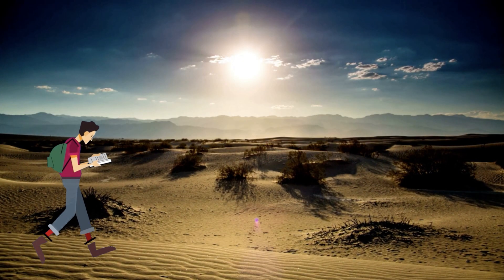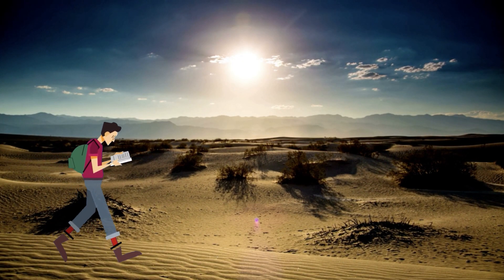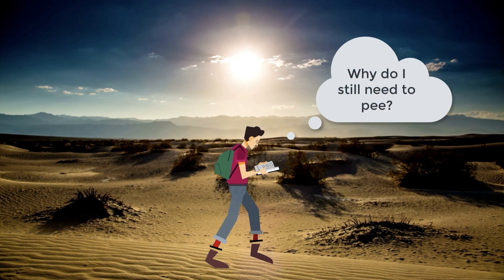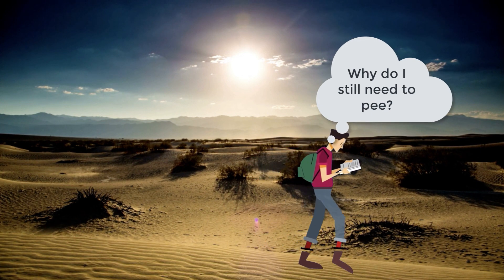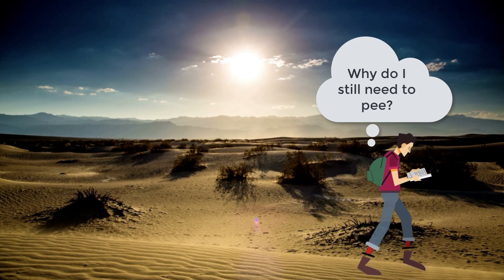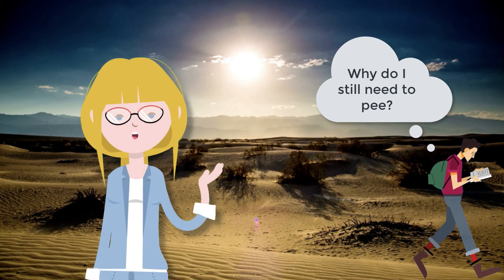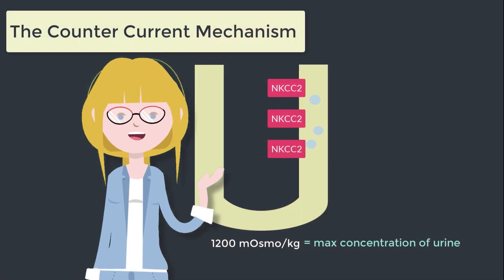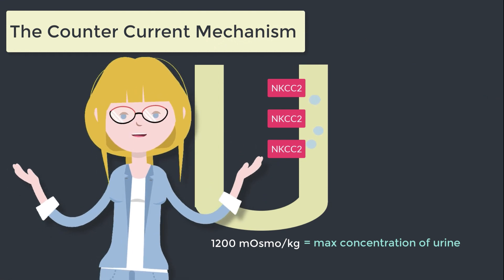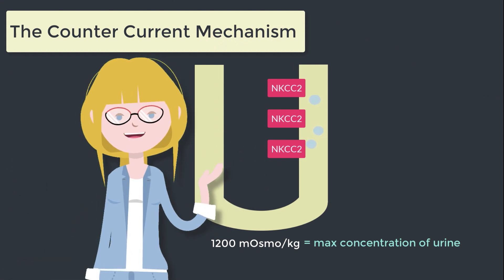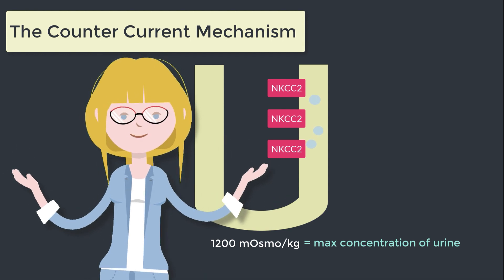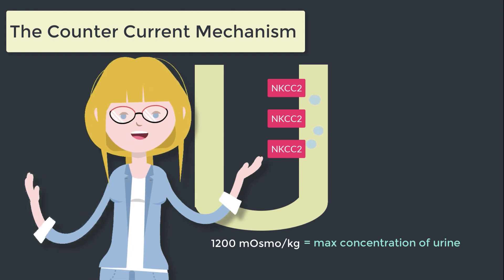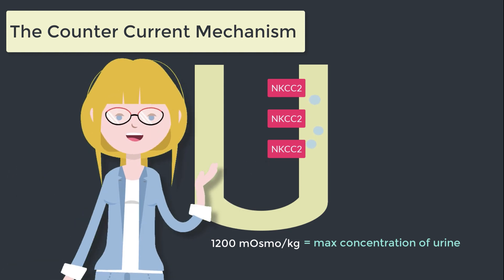Even if you are dehydrated and in the desert with no access to water, you will maximally concentrate your urine to this value. You'll reabsorb as much water as you possibly can using this concentration gradient, but ultimately you'll still lose some water in the urine. So when you are dehydrated, the Loop of Henle will buy you some time to find water, but it's not going to alleviate the need to find water. That said, there's one more piece of magic within this countercurrent mechanism.